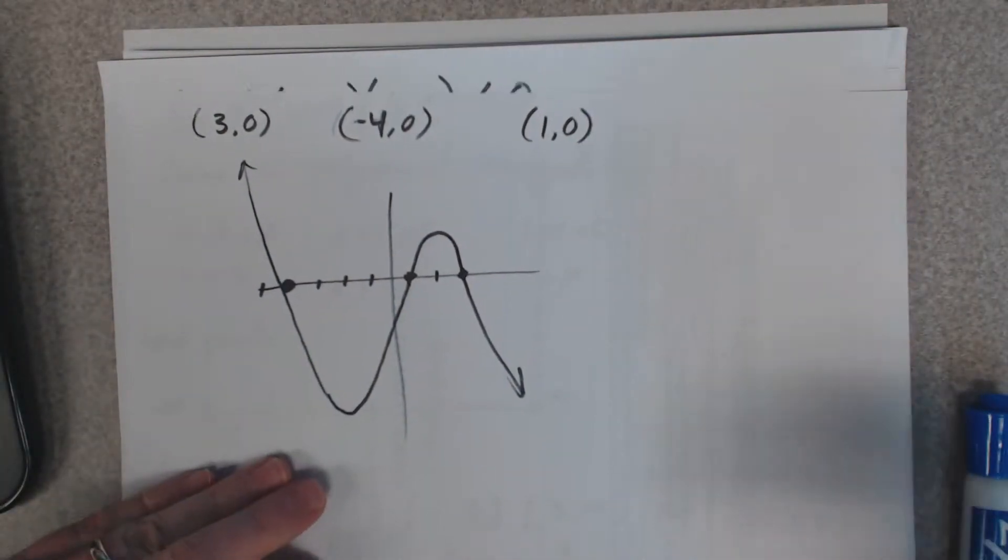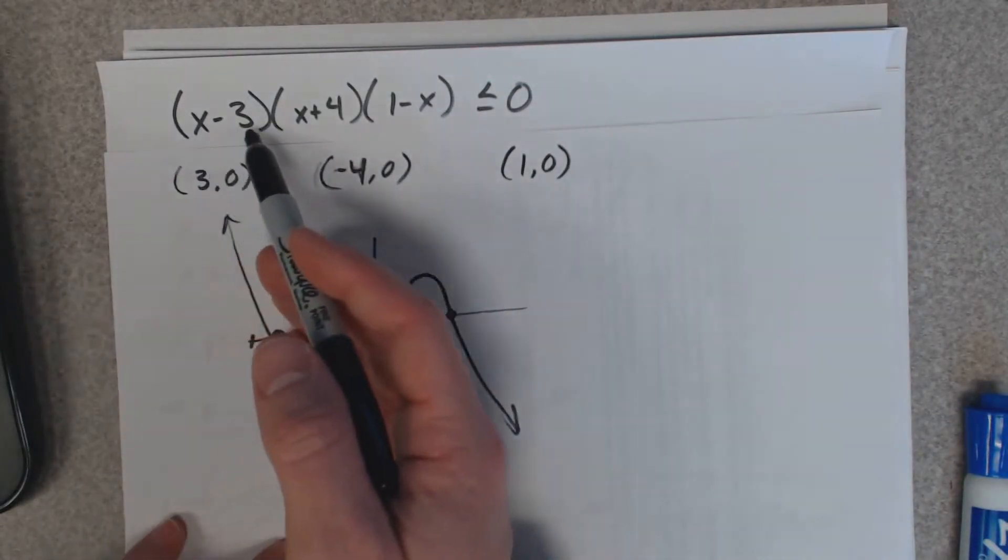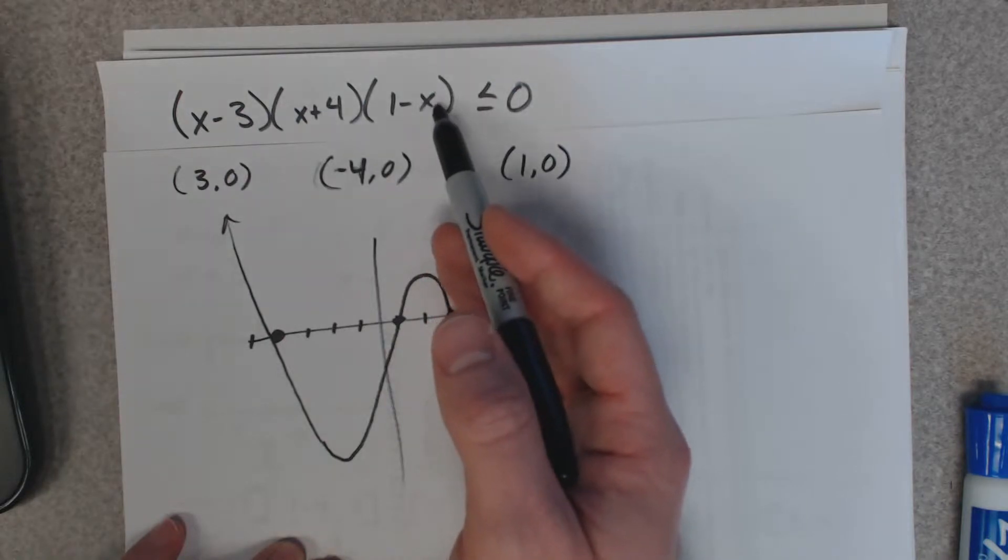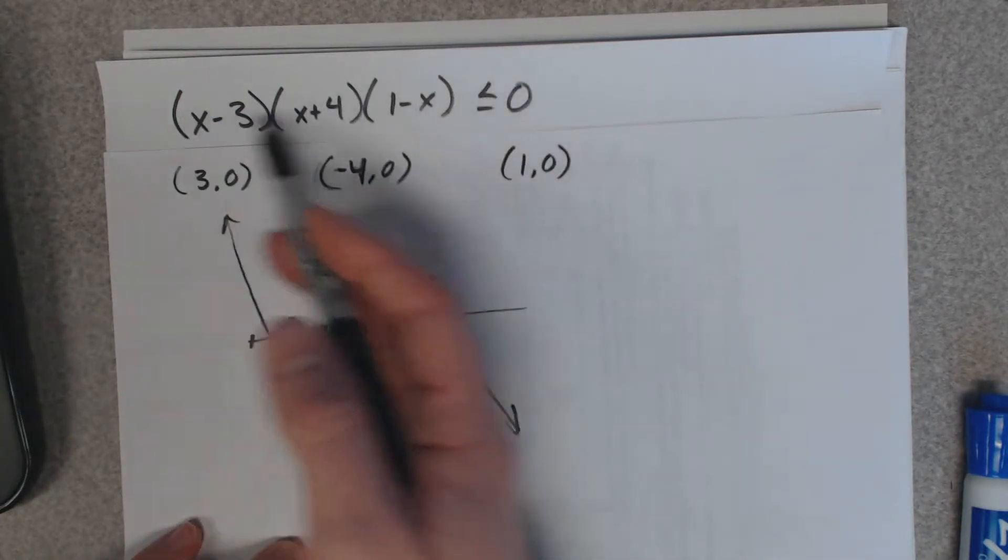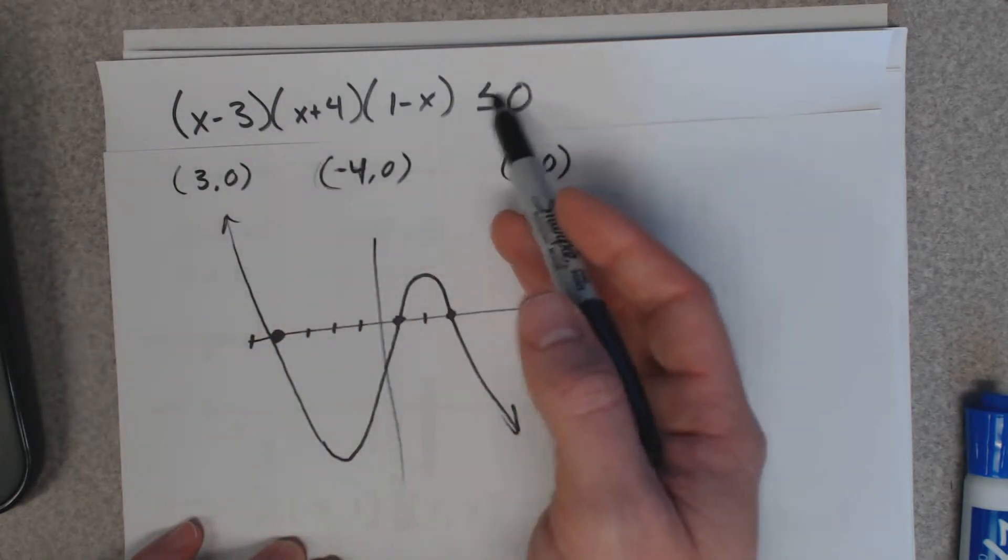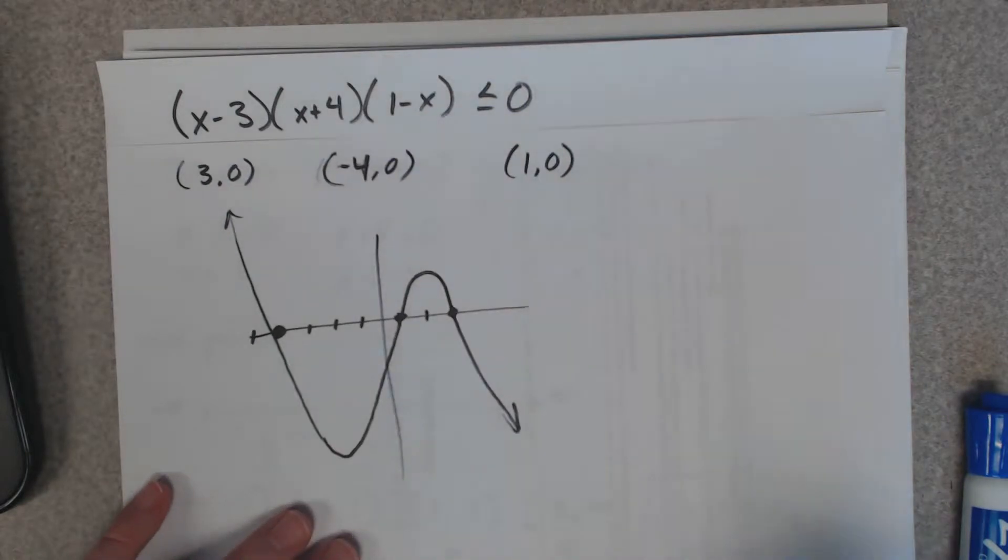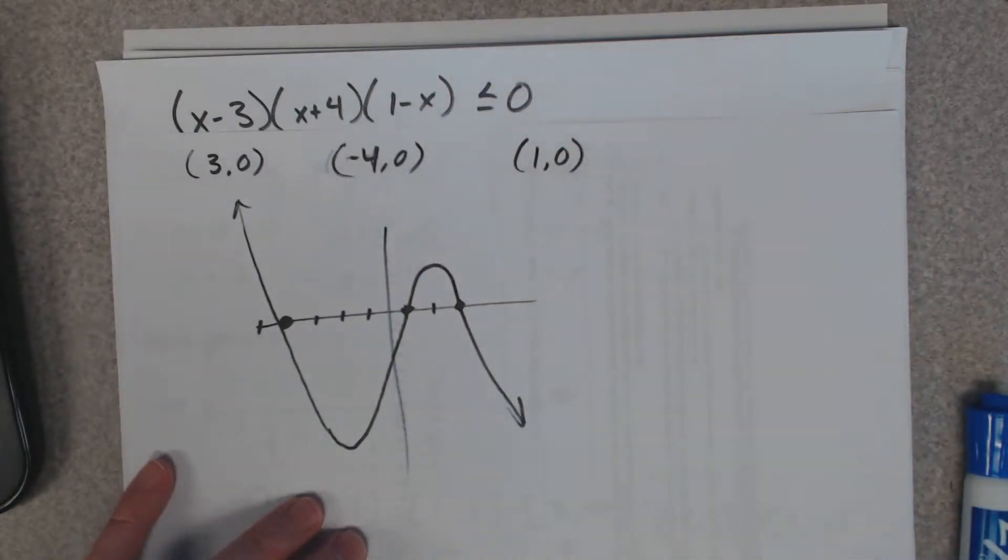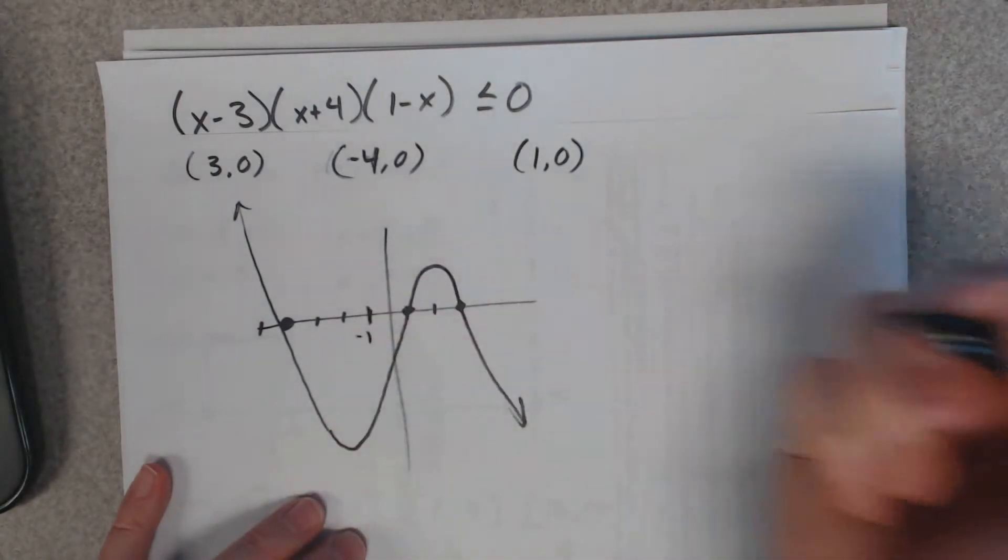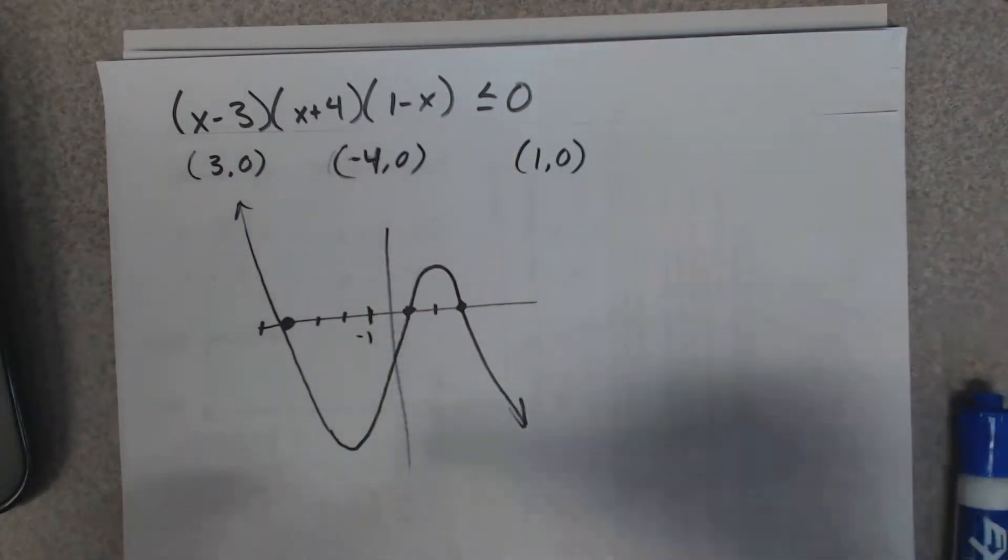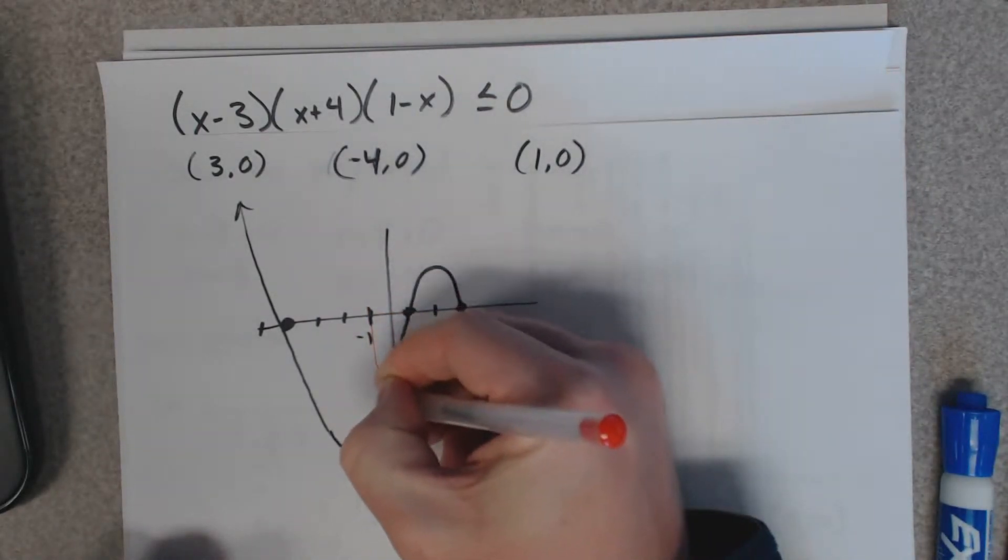If you look back, this says you want to know what x values correspond such that when you plug in the x value and multiply it all together, you get a number that's less than or equal to zero. Looking at the graph, even though you might not think it, it actually tells you. For instance, what happens if I plug in negative 1? Well, I don't know what value you get, but I do know that the y value for this point is negative.